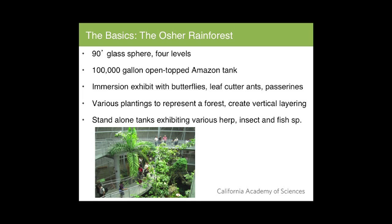It is an immersion exhibit with free-flying butterflies, a leafcutter ant colony foraging for plants on public view, and neotropical passerine species in free flight. The various plantings that represent the forest create vertical layering and provide basic habitats for the birds and nectar for the butterflies. Within these levels are also standalone tanks and terrariums exhibiting various herps, insects, and fish species.